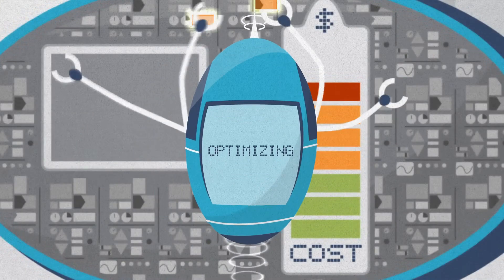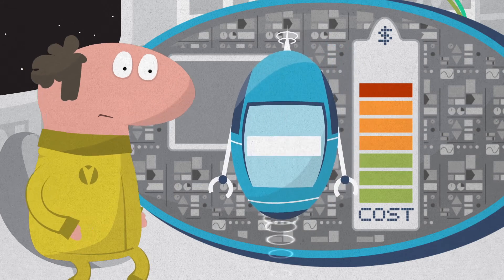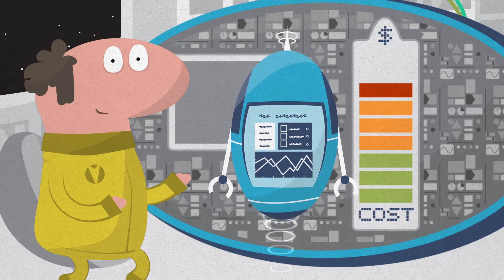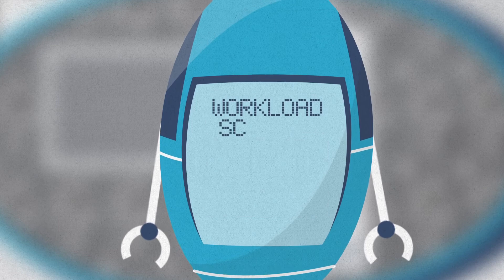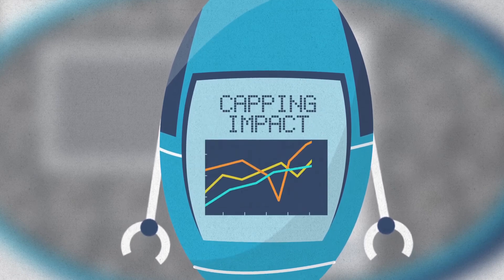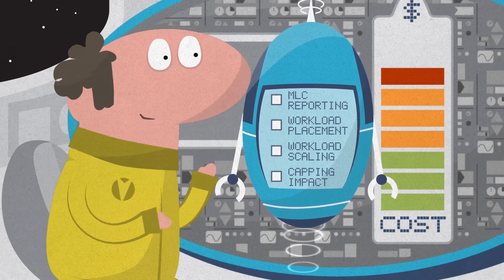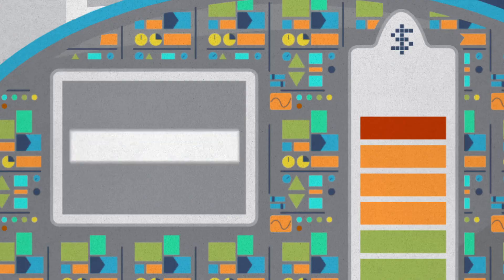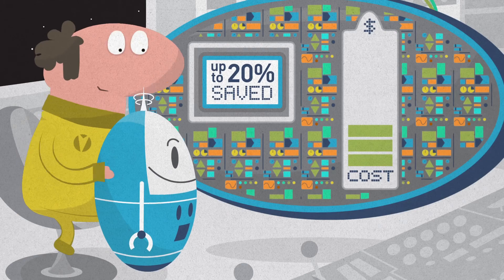It provides the kind of insightful reports you've always wanted. Just imagine how cost-effectively you could run things with a clear picture of what's driving your MLC costs. Cost Analyzer also runs what-if scenarios to test money-saving solutions and predict how changes affect your bottom line. Together, these tools let you fine-tune MLC spending while still accelerating your business. In fact, you can cut MLC spending up to 20% with BMC Cost Analyzer.